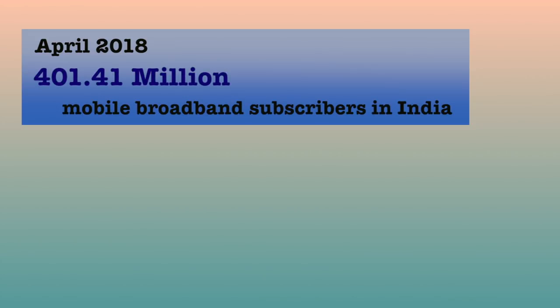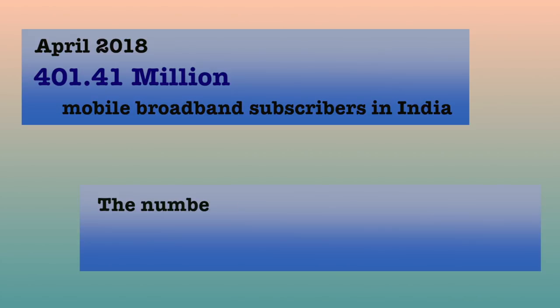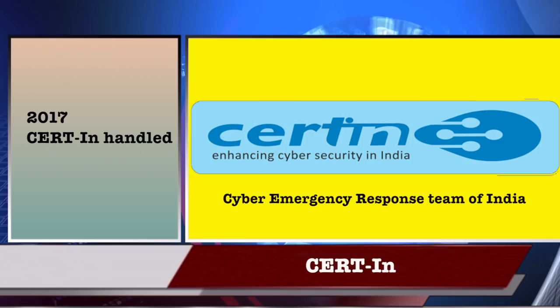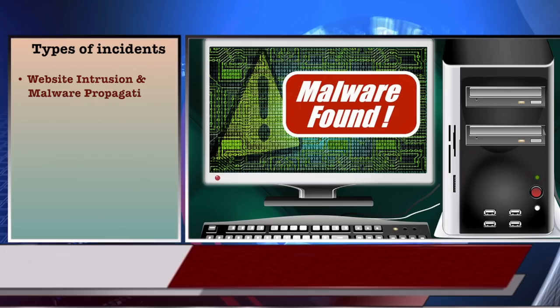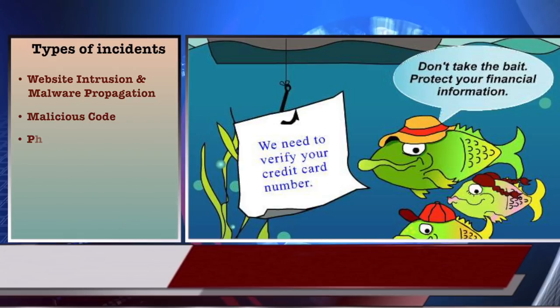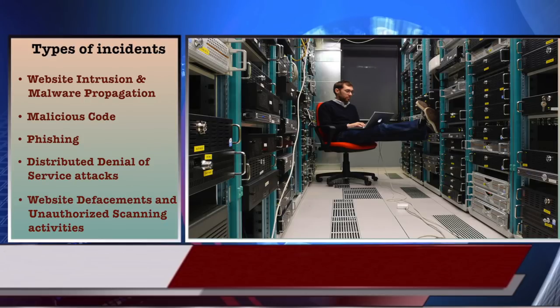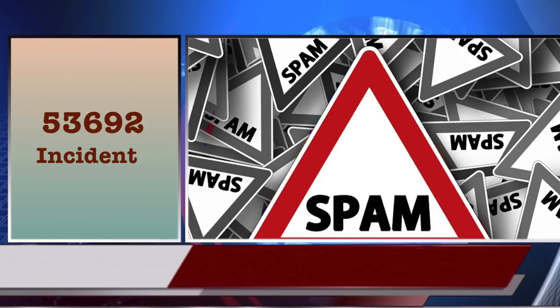As of April 2018, the number of mobile broadband users in India reached 401.41 million. Overall, the number of broadband subscribers including wired in India reached 419.79 million by the end of April 2018. In the year 2017, Cyber Emergency Response Team of India handled 53,081 incidents. The types of incidents handled were website intrusion and malware propagation, malicious code, phishing, distributed denial of service attacks, website defacements and unauthorized scanning activities. In addition, 53,692 spam incidents were also reported.